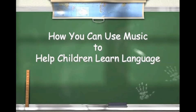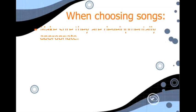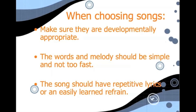Using music to help children develop phonological awareness requires following some simple guidelines. When choosing songs, make sure they are developmentally appropriate. The words and melody should be simple and not too fast. The song should have repetitive lyrics or an easily learned refrain. The more rhyming there is in a song, the easier it is to remember.